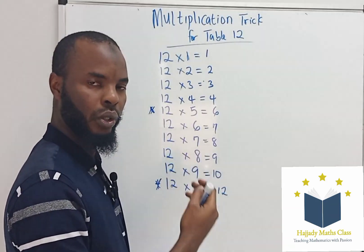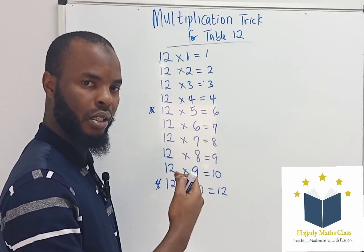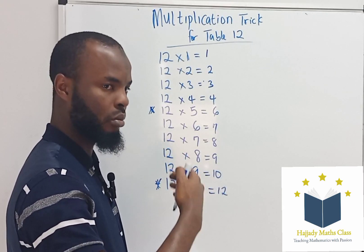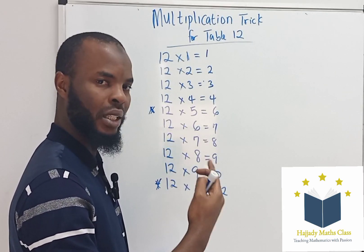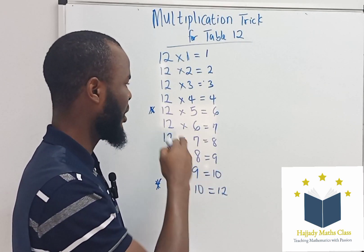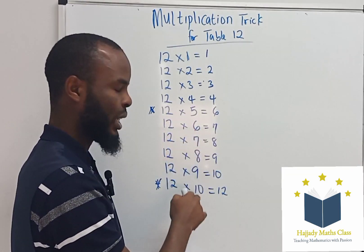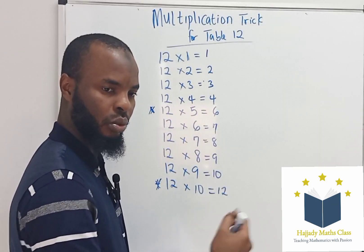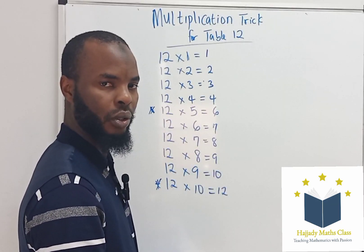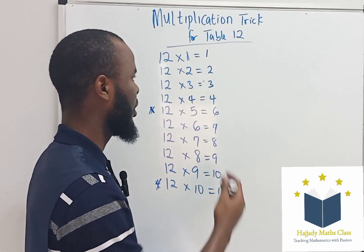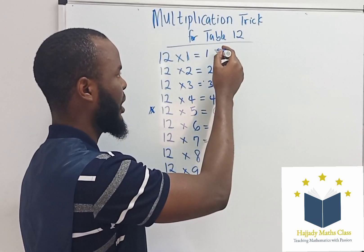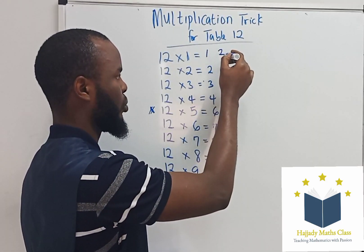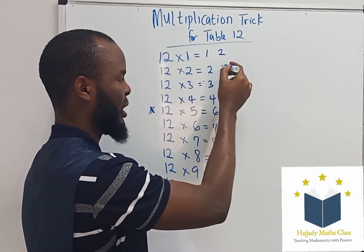You can extend this continuously — to 12 times 20 or anything. But anytime you are getting to 5, 10, 15, you move a step forward. Now here I'm going to start with 2, which is even numbers.